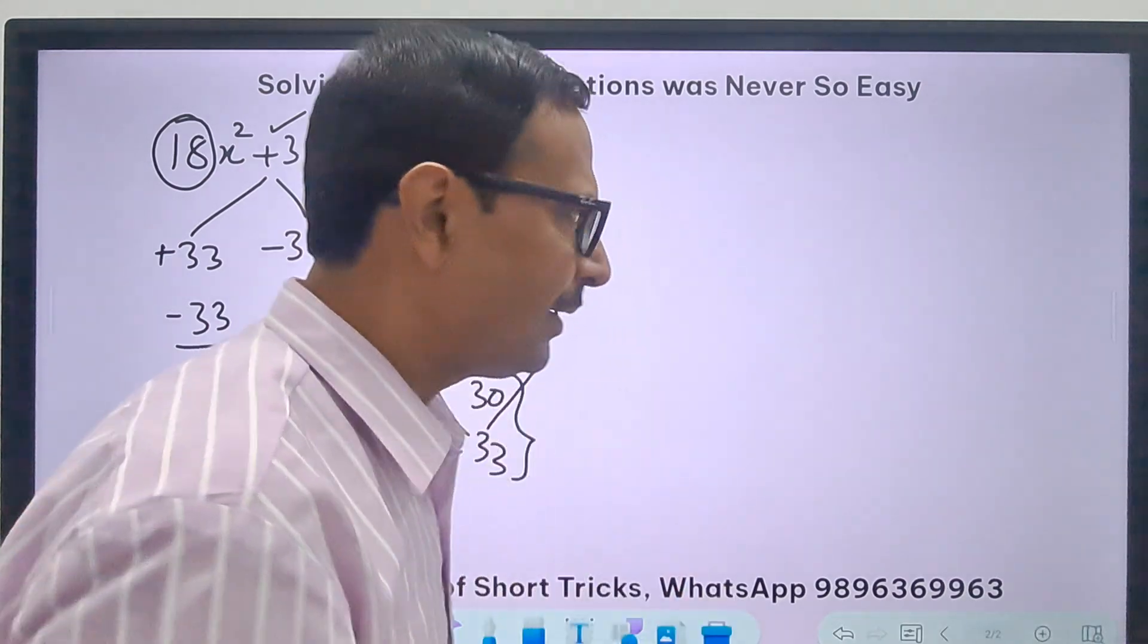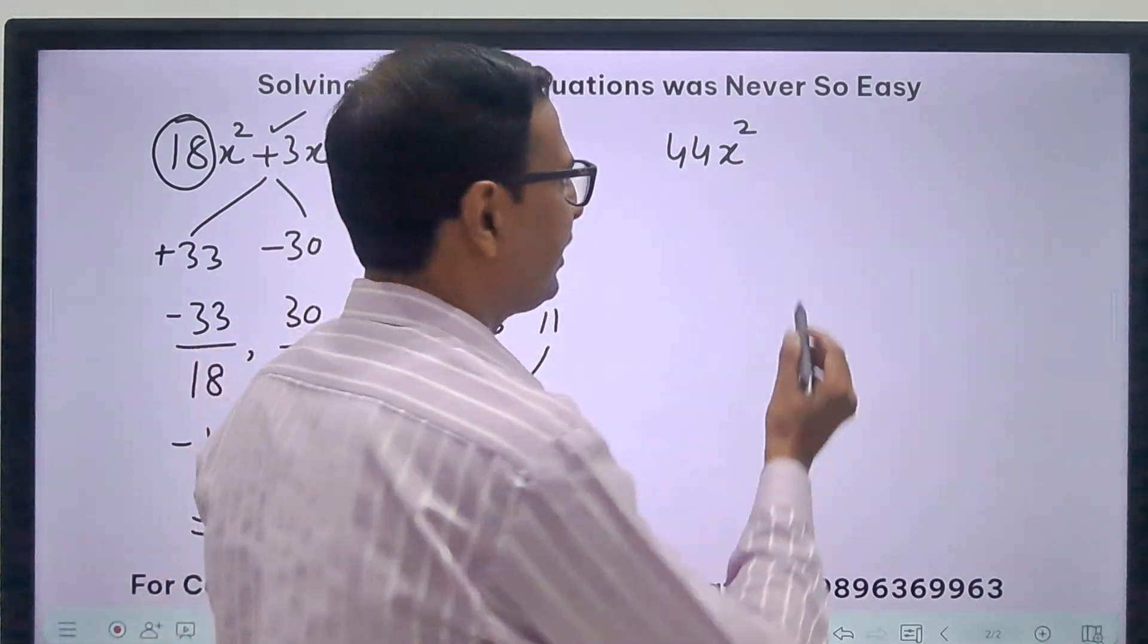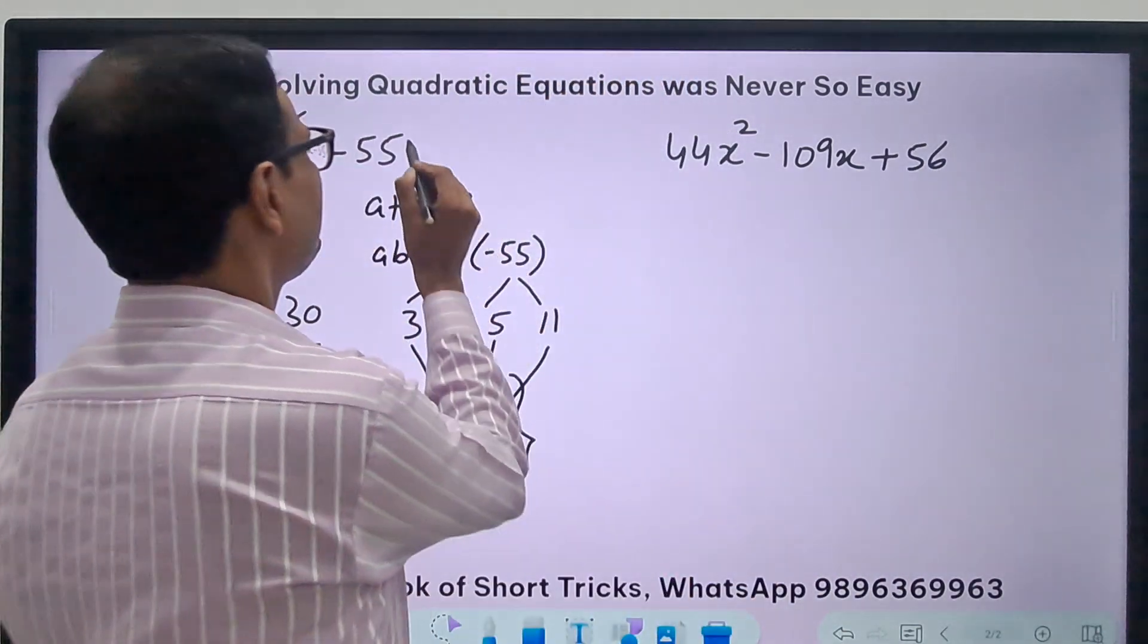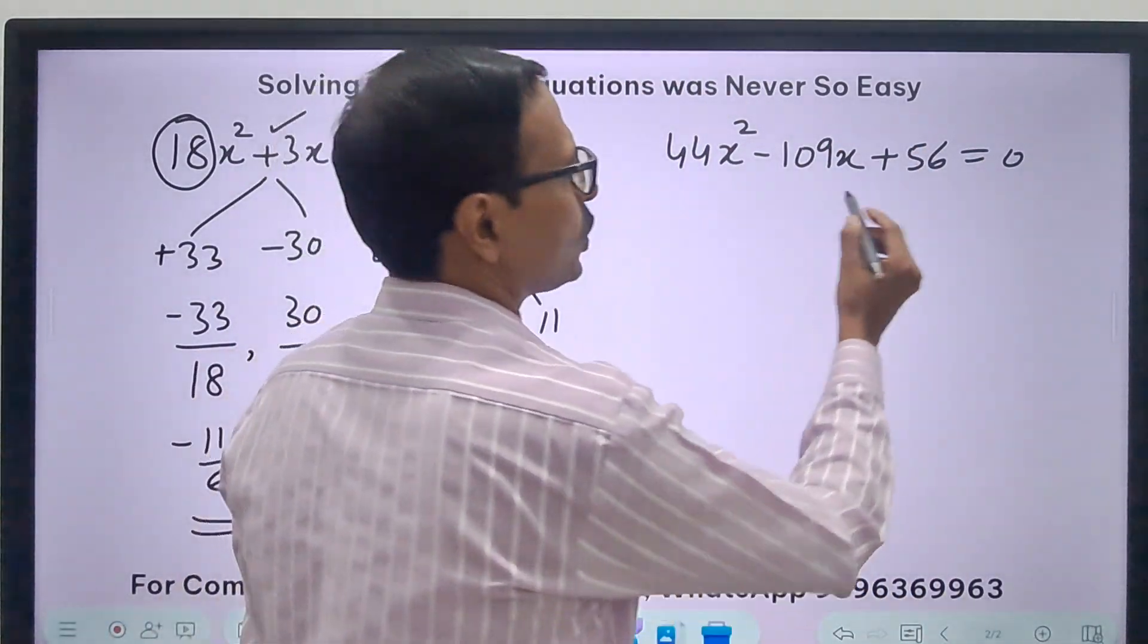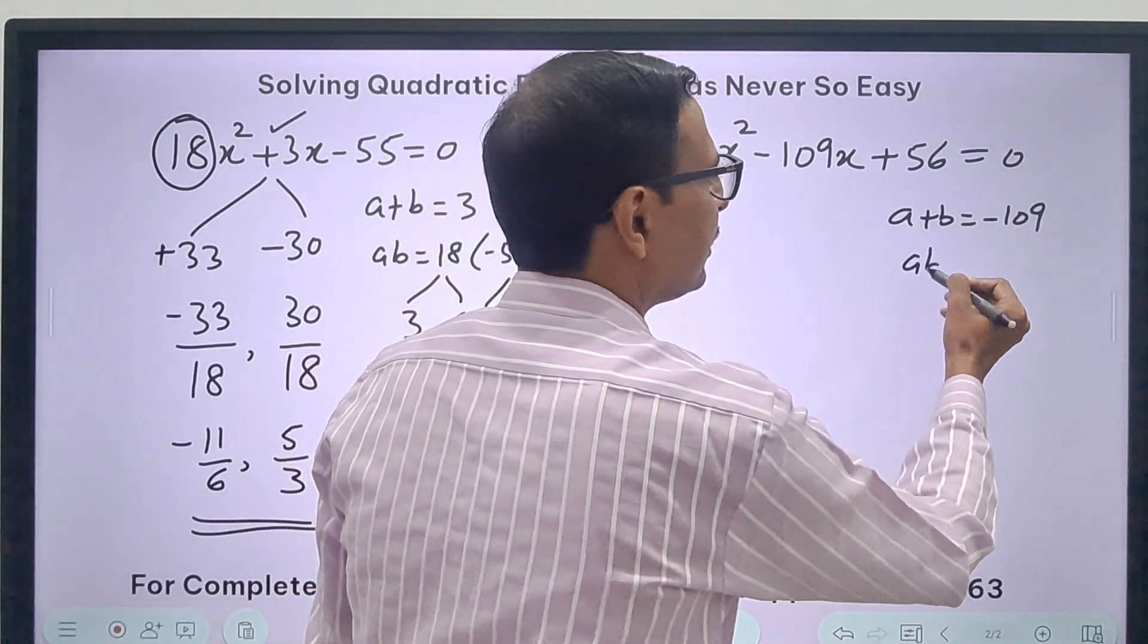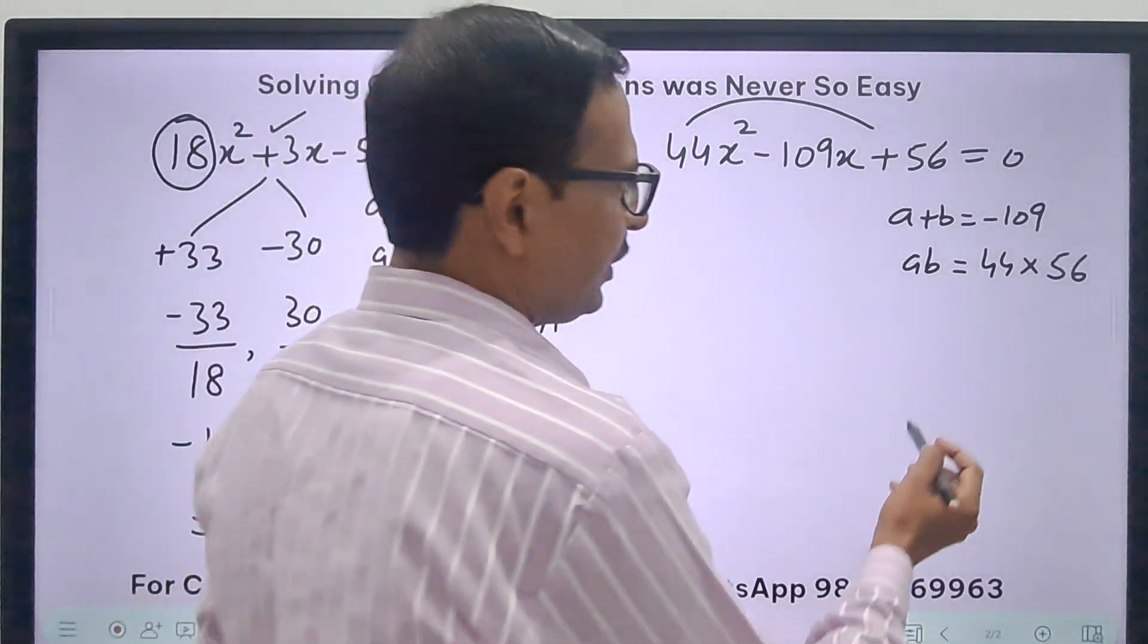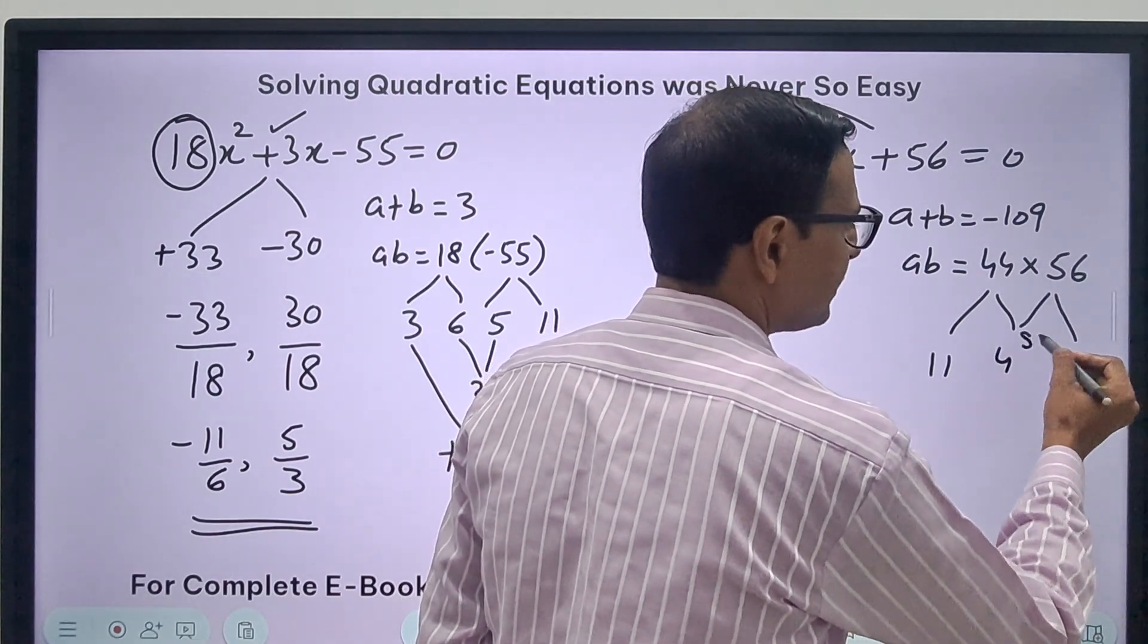Can we have a big one? Let's have 44x² and then we have -109x and finally we have +56. Now look at the coefficients, anybody will get scared. So what is a plus b? It is -109. Big number there. And ab, it is 44 times 56. So 109, let's break the middle term now. When you break the middle term this is 11 times 4 and this is 8 times 7.